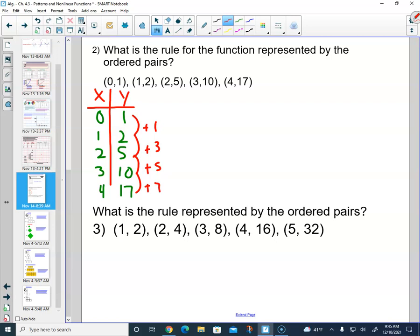Alright, so we know it's going to be non-linear. We're going to have an exponent in our function rule. Now we're just going to see what type of relationship it is. Is there a common ratio, or is there an exponential relationship between the x and y values?